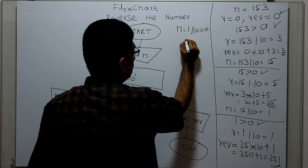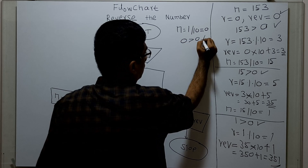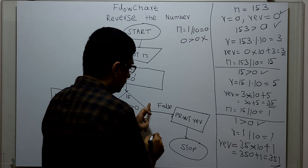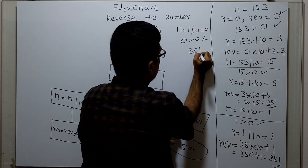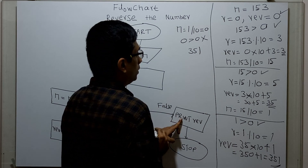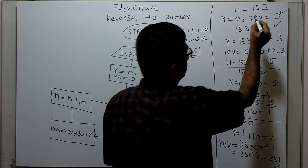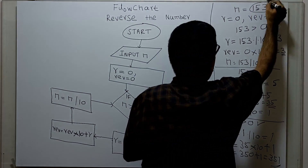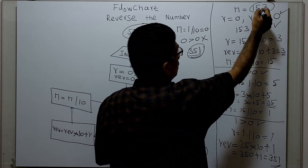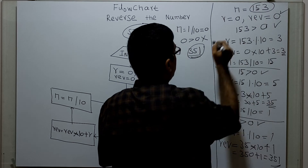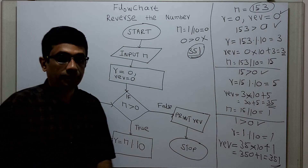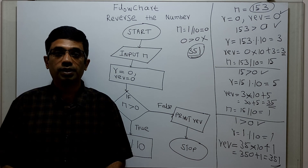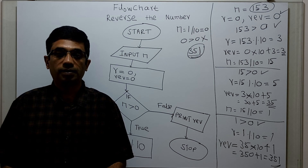Now 0 greater than 0 is false. In this false case, it will print REV. The value of REV is 351. So 351 is my result. I entered 153 and my result is 351, so the reverse of 153 is 351. The logic in the flowchart is working properly. Thanks for watching this video. Please subscribe to my channel, share, comment, and press the bell button.